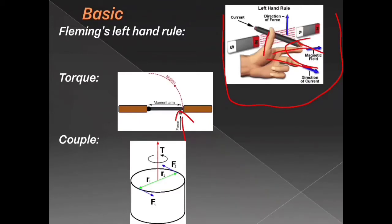Let's see couple. A couple is applying force in two different directions at the same place. Here you can see forces F1 and F2 applied in different directions so that it produces a twist. For example, consider opening a water bottle cap — that is an example of a couple.